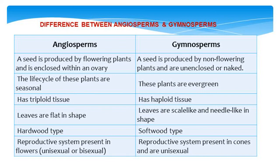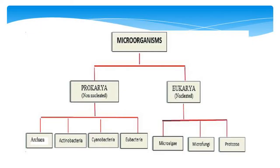Next, we have the classification of microorganisms, which includes prokaryotes and eukaryotes. Prokaryotes are non-nucleated, whereas eukaryotes are nucleated. Examples of prokaryotes include Archaea, Actinobacteria, Cyanobacteria, and Eubacteria. Eukaryotes include microalgae, micro-fungi, and protozoa.